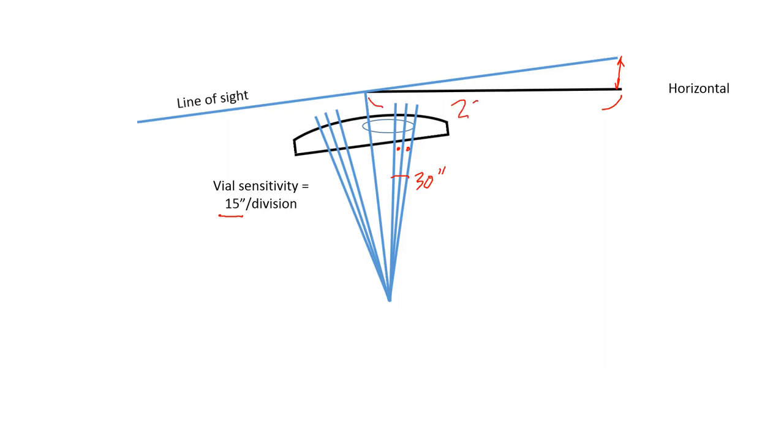Here in our case, let's say that we are dealing with a 280 foot distance from instrument to rod. Well, the angle between the line of sight and the horizontal line is the same angle that we have right here.